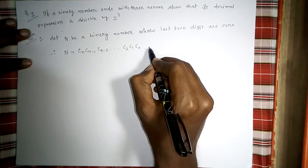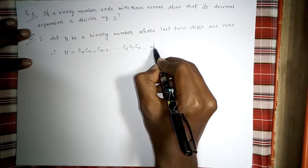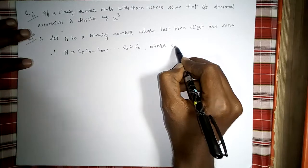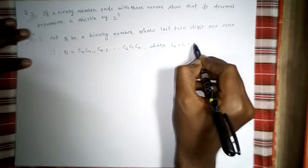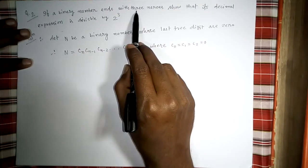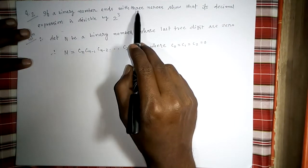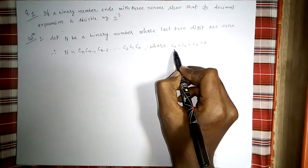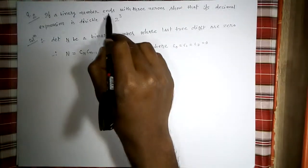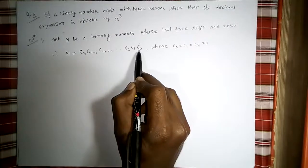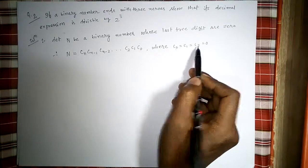According to the question, c_0 = c_1 = c_2 = 0, because the binary number ends with three zeros. These last three digits are zero, that's why these values are zero.